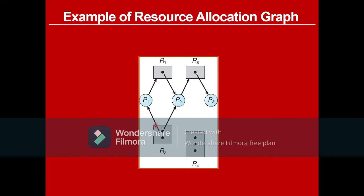For example, R2 is a frying pan resource with two instances — two frying pans. R4 is oil with three bottles. R1 is water and R3 is salt. The three processes: P1 is Adam, P2 is Amy, and P3 is Tina. All three siblings want to make their own breakfast, so all three want a frying pan, but there are only two frying pans. One frying pan is with Amy and another is with Adam — both are occupied.